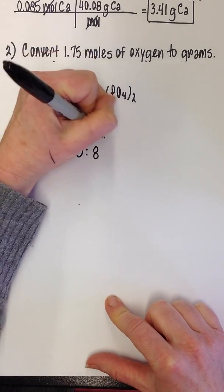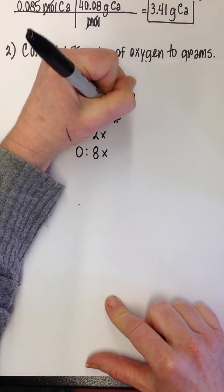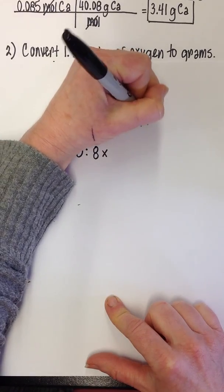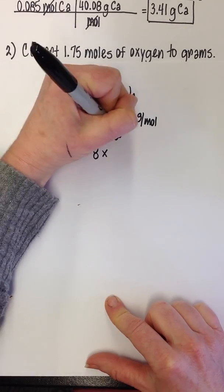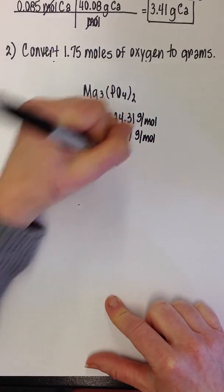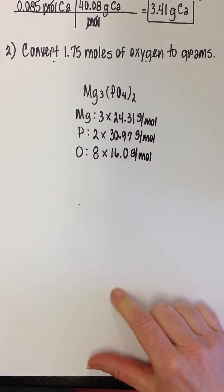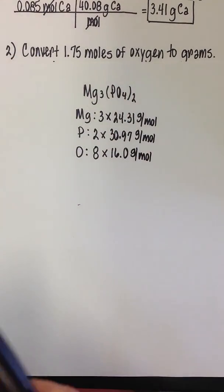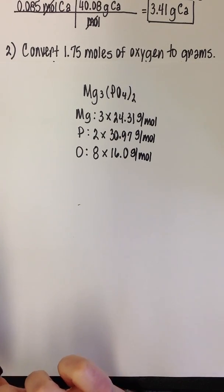We're going to look up the mass of each of these on the periodic table. It would be great if magnesium phosphate were there with a mass, but it's not. Luckily, we know how to figure it out. The mass of magnesium is 24.31 grams per mole. The mass of phosphorus is 30.97 grams per mole. And the mass of oxygen is 16.0 grams per mole. On a problem like this, I consider this scratch work.